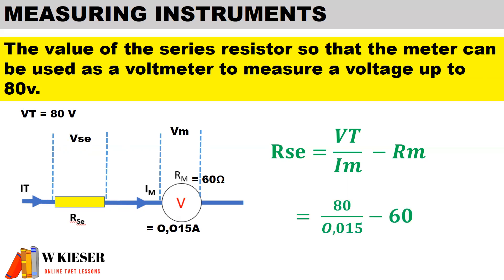The total voltage being measured is 80 volts, the current flow through the meter is 15 milliamps which equates to 0.015 amps, minus the resistance of the meter of 60 ohms. Therefore, the value of the series resistor connected in series with the meter is 5,273.33 ohms.